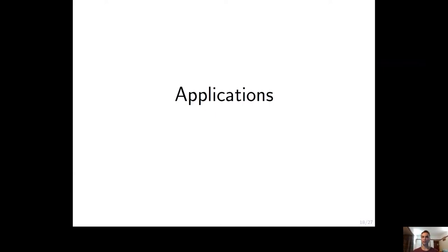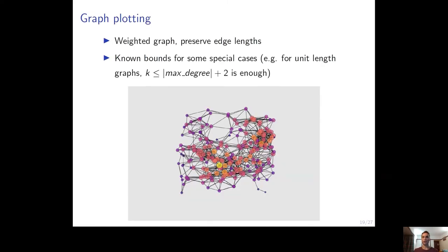Now we will turn to applications — breathtaking stories in my opinion. The first one is from mathematics: we have a graph and would like to plot it to see its structure. Graphs often represent networks like telecommunication networks, and it's important to plot them in some dimensions to see what is close to each other. This leads to multidimensional scaling where we know the distances — essentially edge lengths — and would like to plot it in some dimensions.